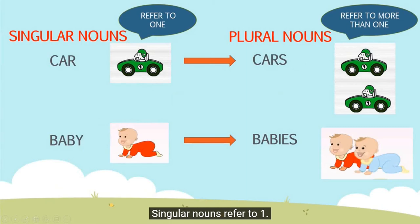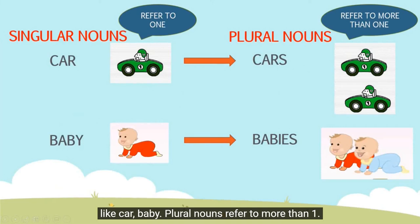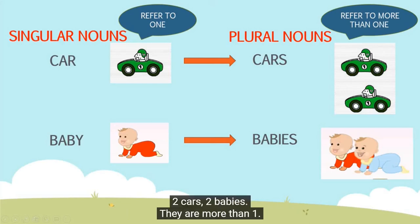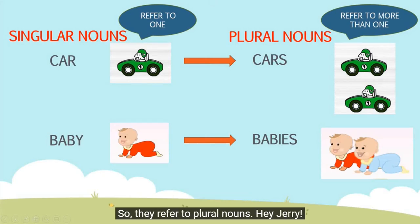Singular nouns refer to one, like car, baby. Plural nouns refer to more than one, like cars, babies. Whenever there is only one, like in this picture — see there is only one car, one baby — they are all singular nouns. Whereas in this picture we see two cars, two babies. They are more than one, so they refer to plural nouns.